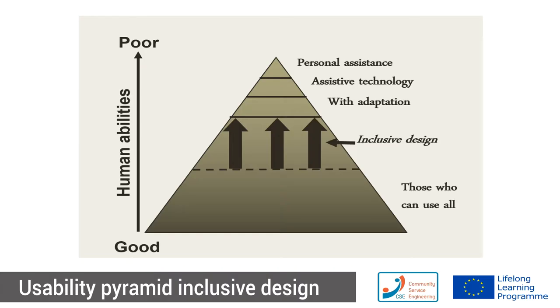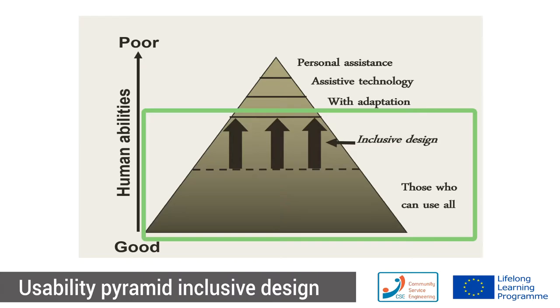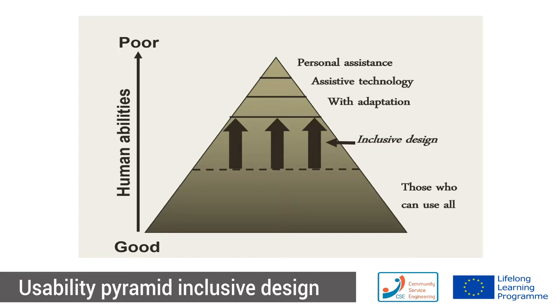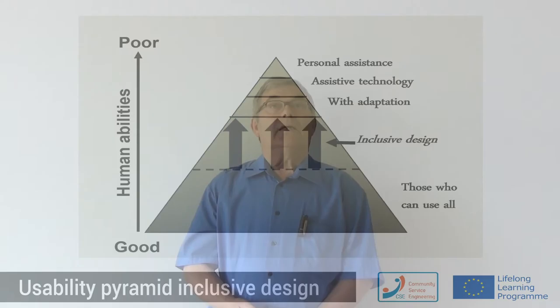When we go further to inclusive design or design for all, the same pyramid shows up, but the different levels have moved. The bottom part can become larger if you make inclusive design, meaning fewer people need special adaptations or assistive technology. But there will always be a small group that needs personal assistance. So design for all doesn't mean design for everyone, but for a much larger part of the population than before.